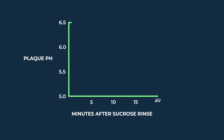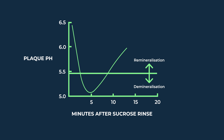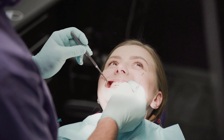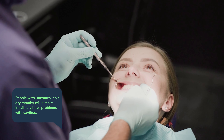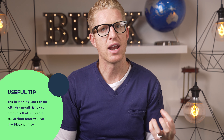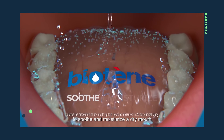Another thing that affects the Stefan curve is your saliva. The speed of the curve assumes you have adequate saliva to buffer and supply minerals to your tooth. However, if you have dry mouth, this is not the case. Your mouth will not buffer, and your plaque will remain below the critical pH too much regardless of whether you're snacking. People with uncontrollable dry mouth will almost inevitably have problems with cavities. Drinking lots of water doesn't help much because water doesn't have the same properties as saliva — especially those good minerals. The best thing you can do with dry mouth is use products that stimulate saliva right after you eat, like Biotene rinse.